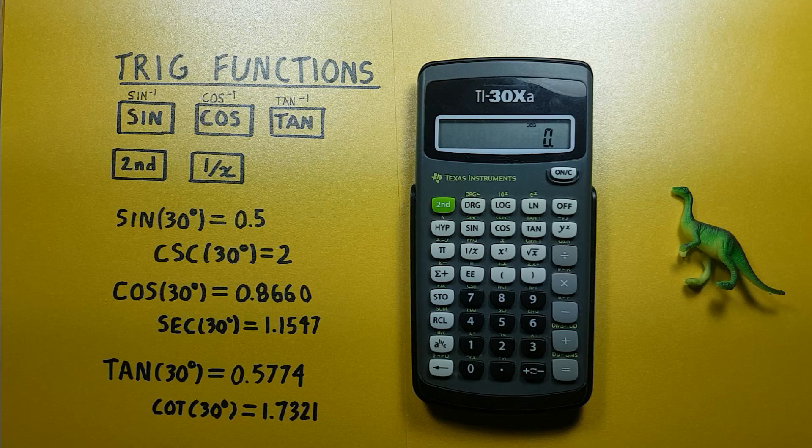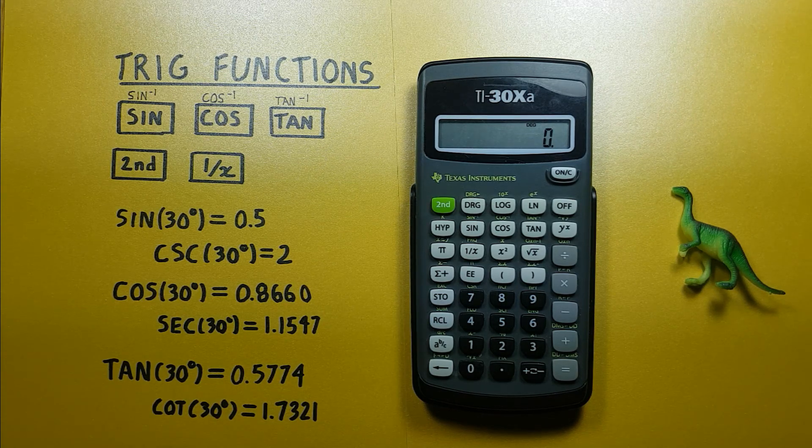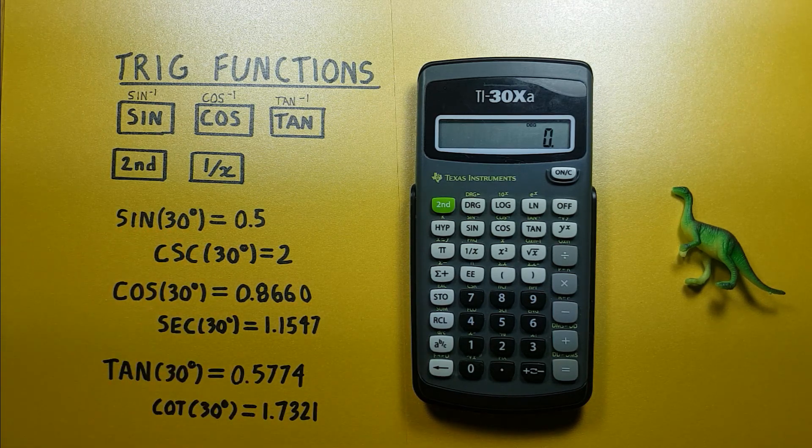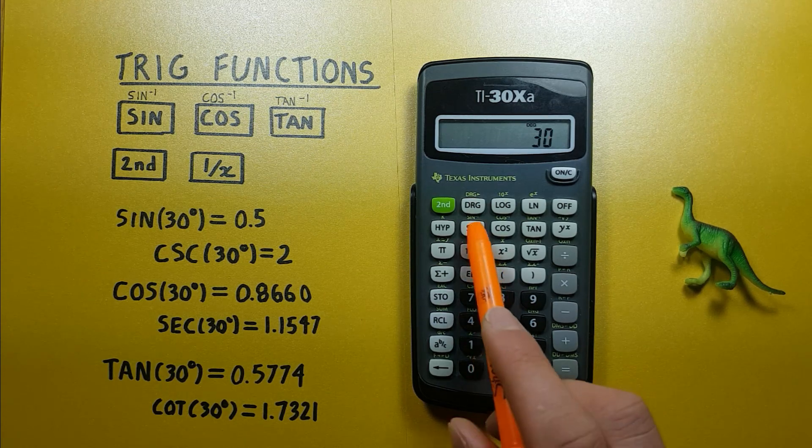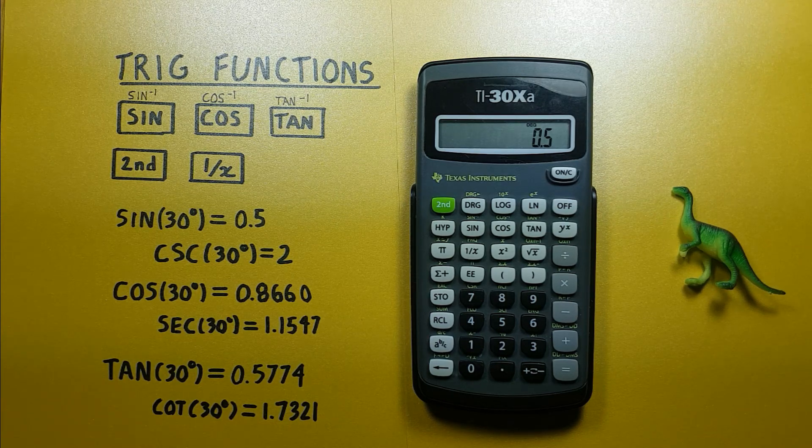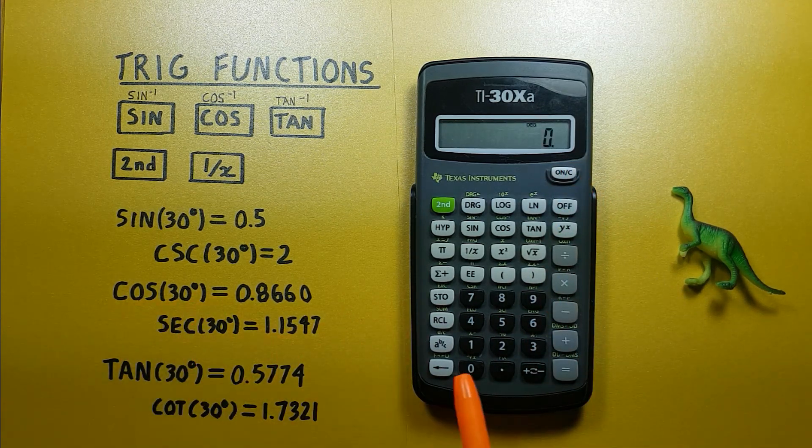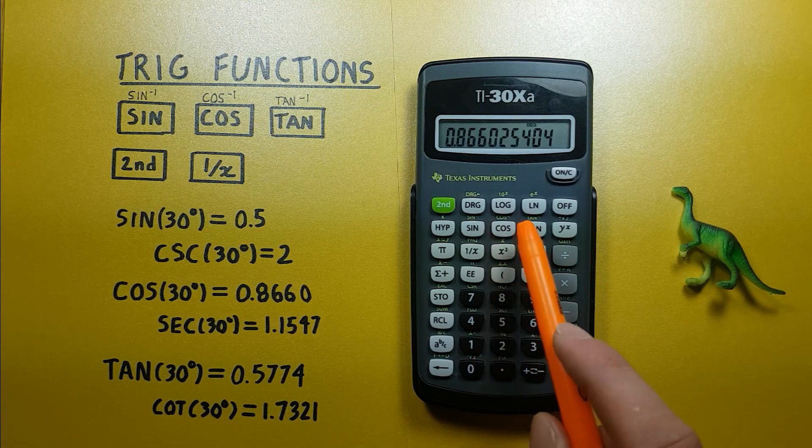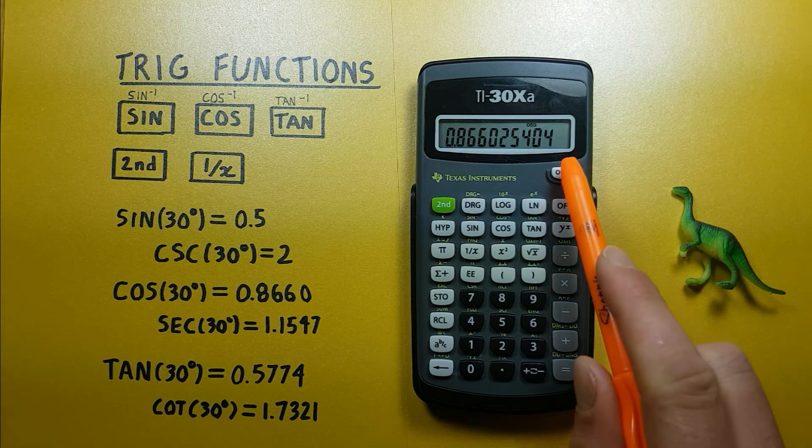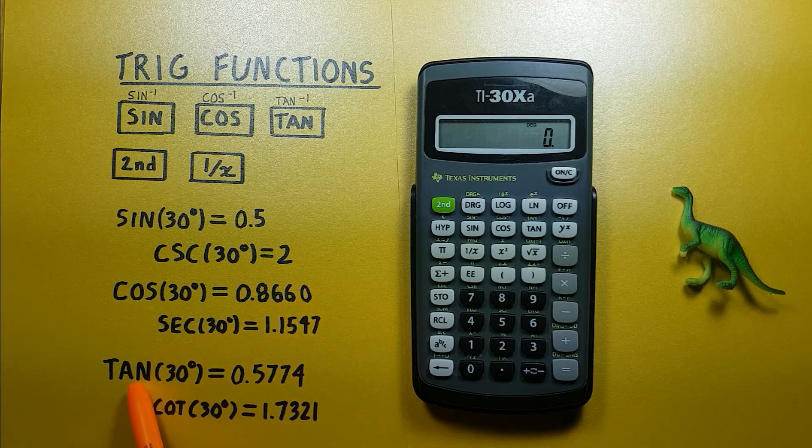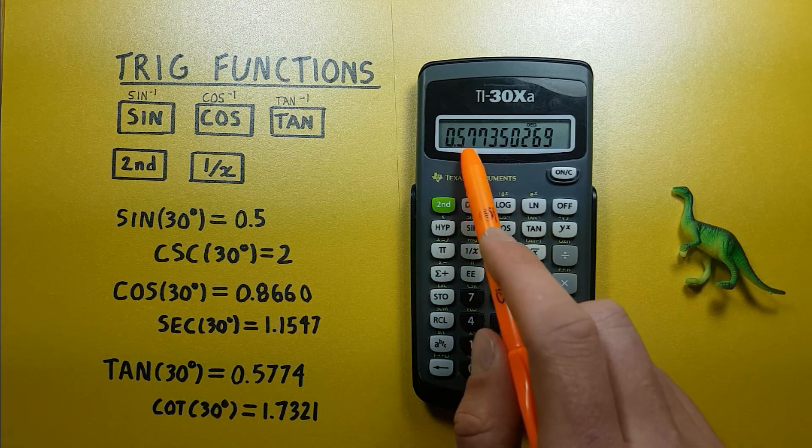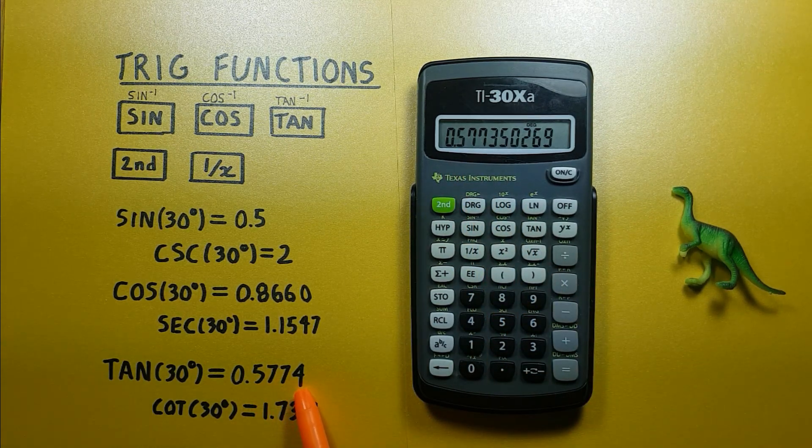All right, now that we're set correctly, if we want to simply do a sine, cosine, or tangent, first we enter the number of degrees. So for sine of 30 degrees, we would enter 30, sine, and get sine 30 degrees equal to 0.5. Same with cosine 30 degrees, cosine gives us cos 30 of 0.8660. And tan 30, again 30 and then tan, gives us tan 30 of 0.5774 rounded.